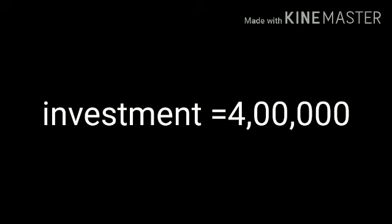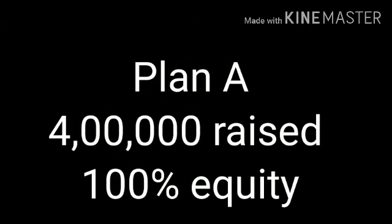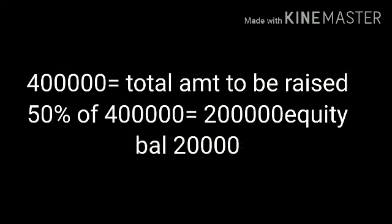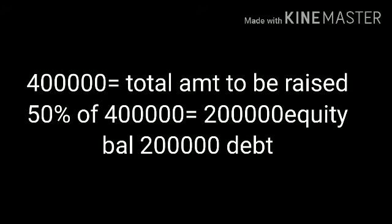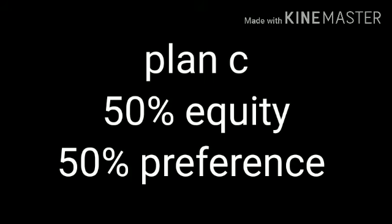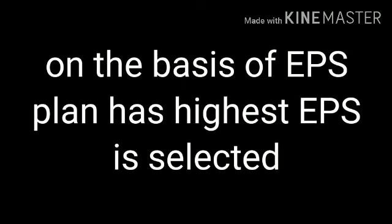EBIT of XYZ Limited is 1 lakh 60,000. The firm has decided to raise rupees 4 lakh, and three financial plans are available: Plan A, Plan B, and Plan C. In Plan A, 4 lakh is raised only through equity share capital. In Plan B, 50% equity and 50% debt capital — so 2 lakh in equity shares and 2 lakh in debt capital. In Plan C, 50% equity and 50% preference — that means 2 lakh equity shares and 2 lakh preference shares. Selection is on the basis of earning per share; the plan with the highest EPS is selected.